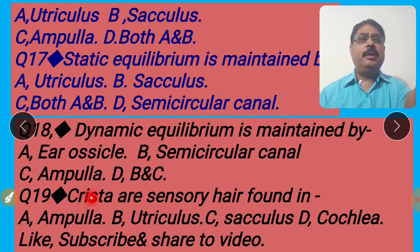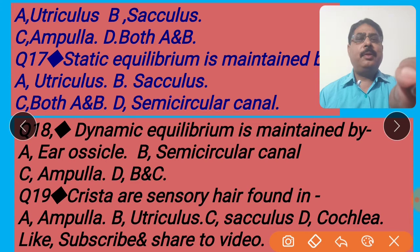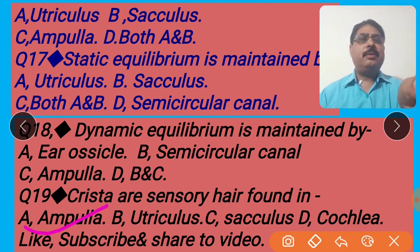Next question, 19: Crista are sensory hairs found in — option A, ampulla; option B, utriculus; option C, sacculus; option D, cochlea. Crista ampullaris is a sensory hair present in the ampulla. So the right answer is A. I shall click A for the right answer. Ampulla is the terminal part of the semicircular canal. You can see in detail in my video — I shall provide a link at the end screen and an eye button in the video.